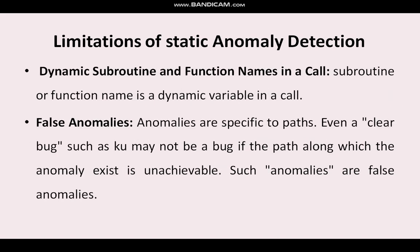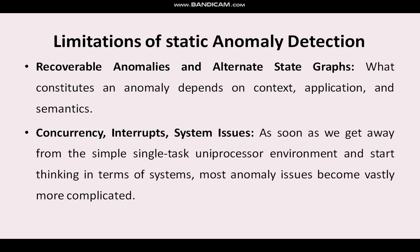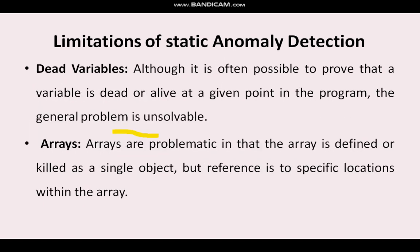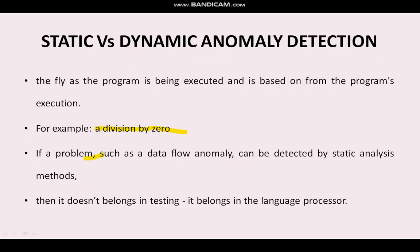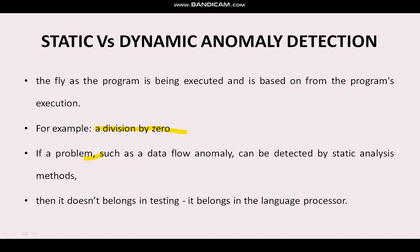All things linked with runtime issues and runtime overheads are a big drawback of static anomaly detection. That is why these limitations are categorized as: dead variables, arrays, records and pointers, dynamic subroutine and function names, false anomalies, recoverable anomalies and alternate state graphs, and concurrency interrupts and system issues. These are the main limitations of static anomaly detection. This covers anomaly detection and the types of anomaly detection. In the coming videos we will talk about more — please subscribe to the channel Intelligible Tutorials. Thank you for watching.